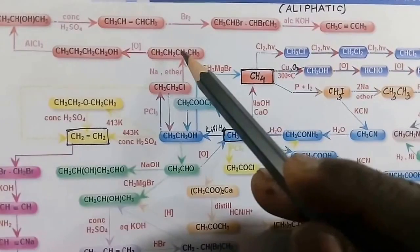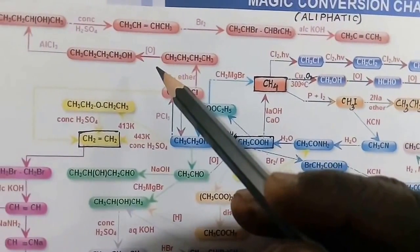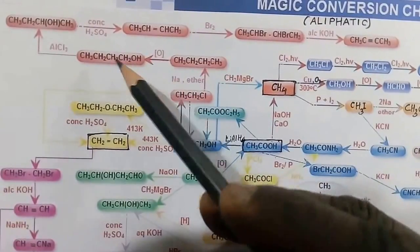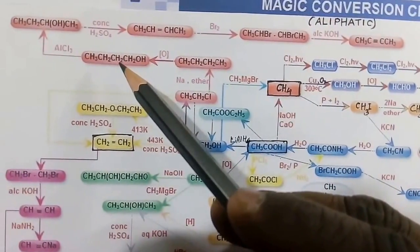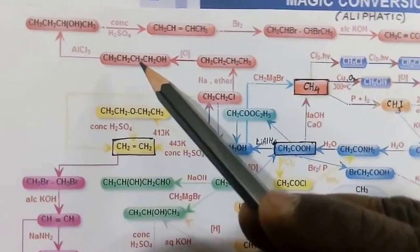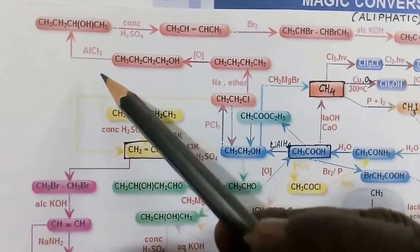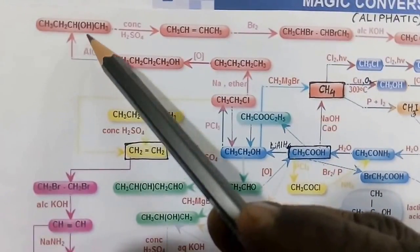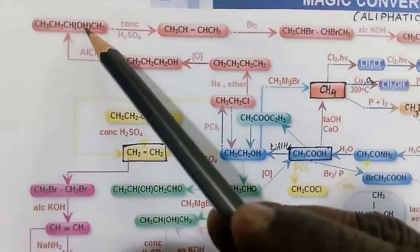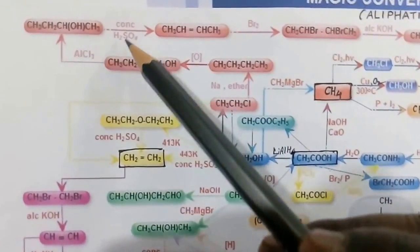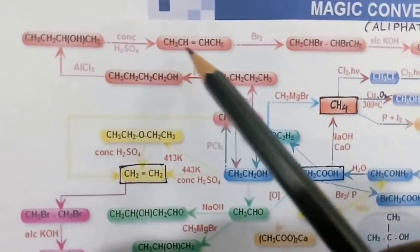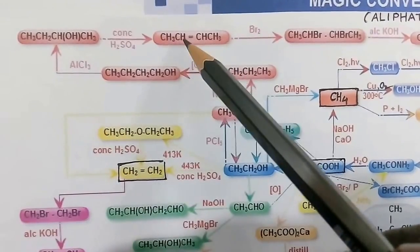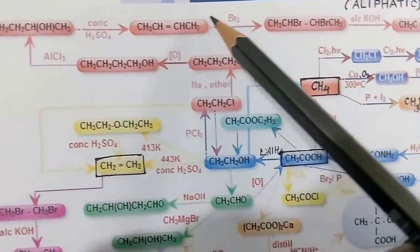Ethyl chloride by the Wurtz reaction in the presence of sodium and ether gives n-butane. n-Butane on oxidation gives 1-butanol. 1-Butanol can also be converted to 2-butanol — that is isomerization — using AlCl₃. 2-Butanol when treated with concentrated H₂SO₄ gives the main product 2-butene.